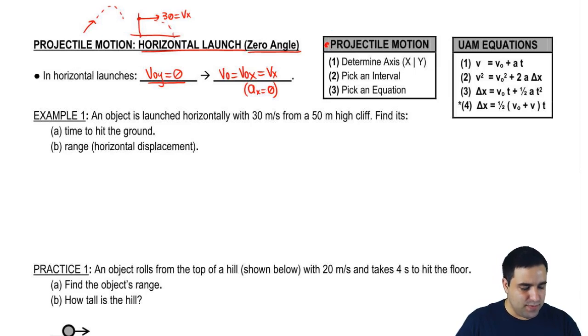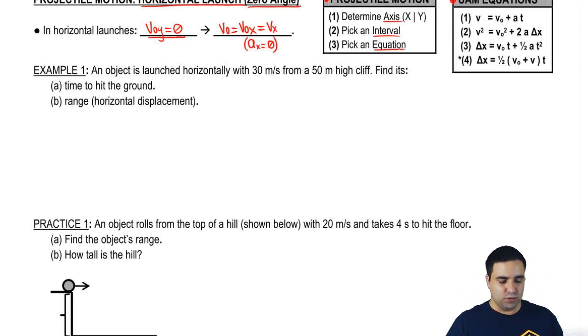I have here two boxes reminding us of the steps of projectile motion problems. You pick the axis, interval, and equation, and then the four equations of motion we have. So let's do a quick example and see how this works.